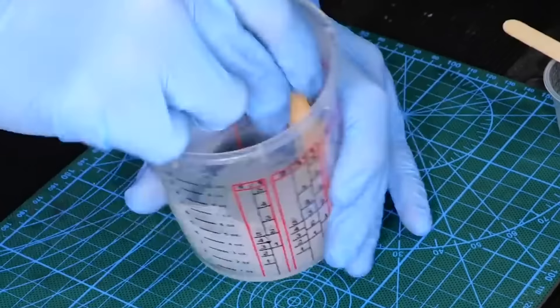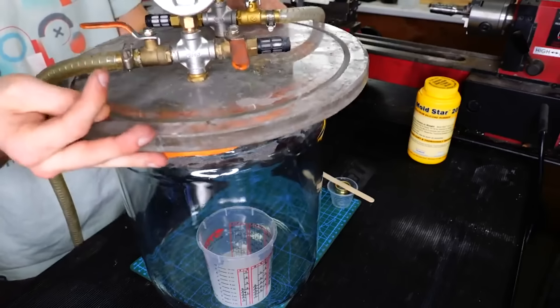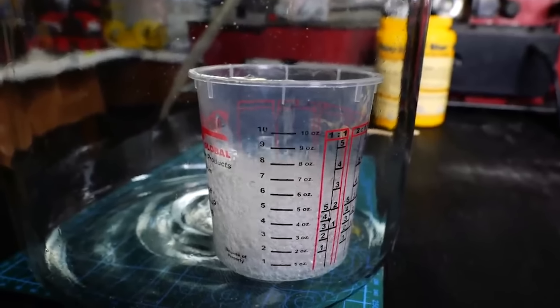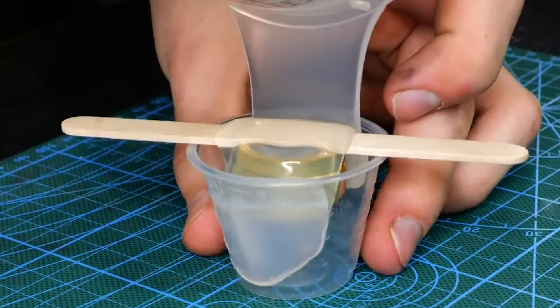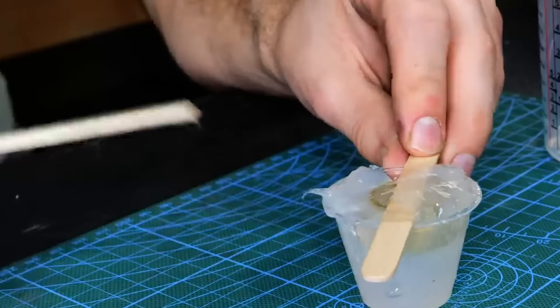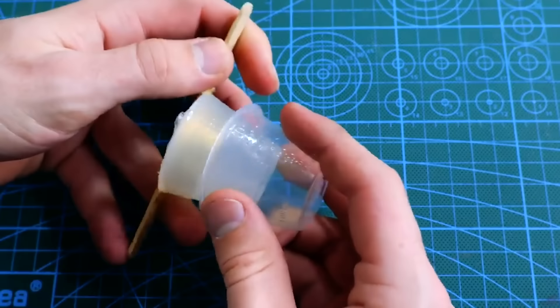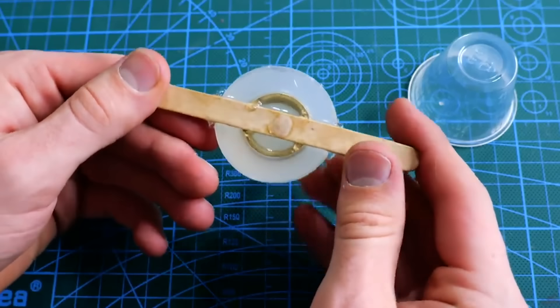Now I'll go ahead and mix up some silicone. I'll use a vacuum to degas it. Then we'll pour it around the brass blank. And we should be left with a nice mold ready to cast our resin into.